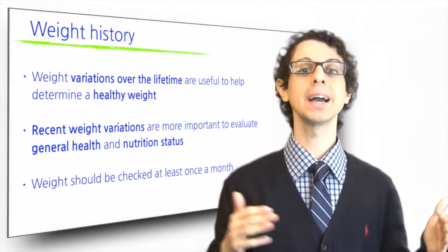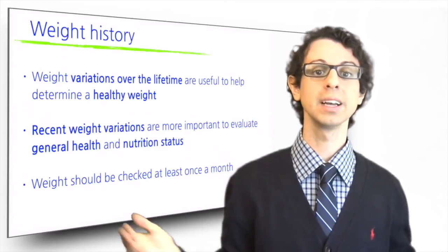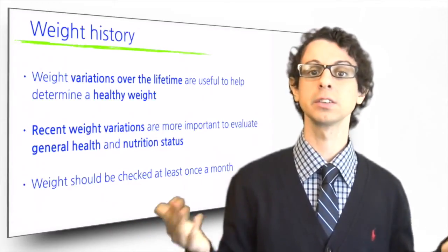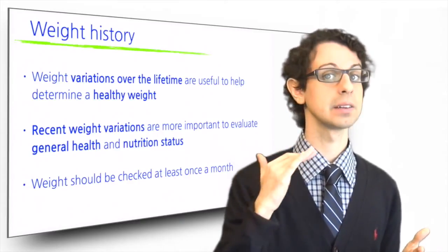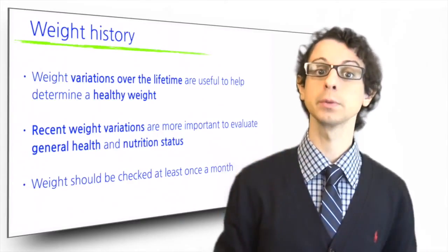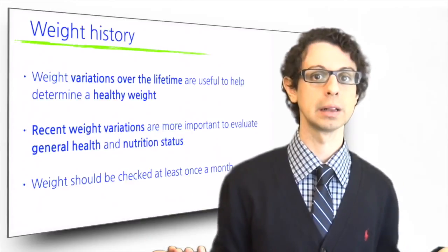A person whose BMI has been 17 their whole life is likely not underweight, just constitutionally thin. A person whose BMI was 24 until five years ago and now dropped to 17 is likely to be malnourished.